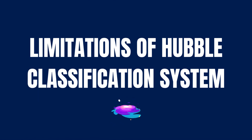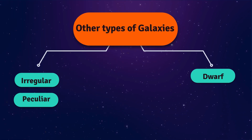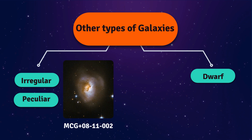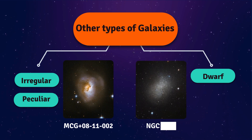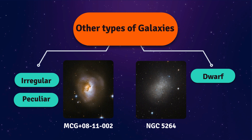Hubble's system is very helpful, but it has limits. Astronomers have discovered more types of galaxies which do not fit in the Tuning Fork Diagram. One example is irregular or peculiar galaxies, which have no clear shape or structure — some form when galaxies collide or interact with each other. There are also dwarf galaxies, which are much smaller than normal galaxies but can have similar features to ellipticals, spirals, or irregulars.